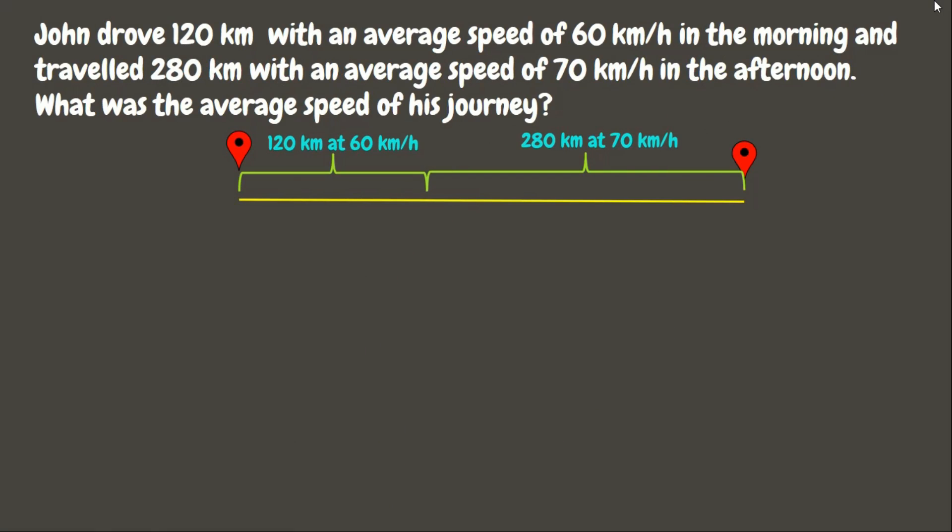Awesome! Now let's go and have another example. John drove 120 kilometers with an average speed of 60 kilometers per hour in the morning, and traveled 280 kilometers with an average speed of 70 kilometers per hour in the afternoon. What was the average speed of his journey?